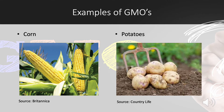GMO corn is used for food and drinks for humans, but is also used to feed livestock such as chicken and cows. Potatoes are another food that can be genetically modified. Genetically modified potatoes were approved by the Department of Agriculture in 2014 and then the Food and Drug Administration in 2015. Potatoes can be modified for many reasons, such as to prevent bruising on the potato itself or for pest resistance. They can also be modified to produce lower levels of acrylamide when cooked.